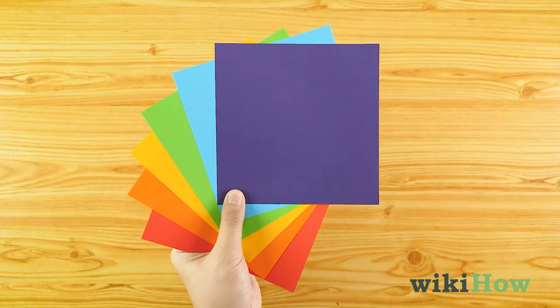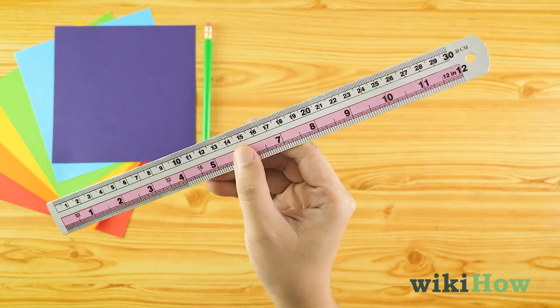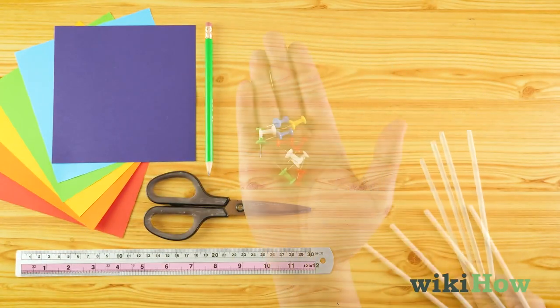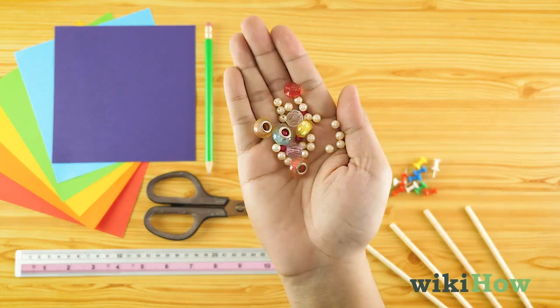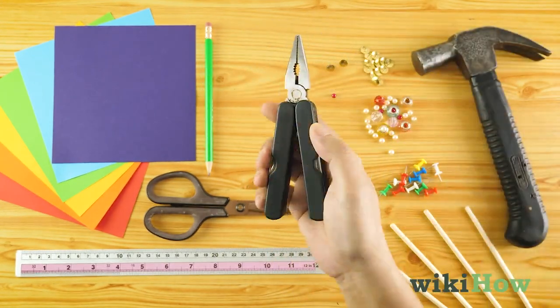You'll need a piece of square colorful paper, a pencil, a ruler, scissors, a dowel, a pushpin, a small bead, a thumbtack, a hammer, and some pliers.